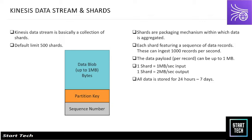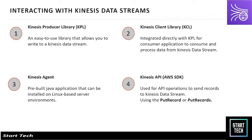A Kinesis Data Stream is essentially a collection of shards. A shard is a packaging mechanism that holds data. The default limit is 500 shards, but you can raise a ticket to increase it. Each shard can ingest 1,000 records per second, with a payload of up to 1 MB. One shard equals 1 MB of input and 2 MB of output. All data is stored for 24 hours and can be extended to 7 days, after which it is auto-deleted.